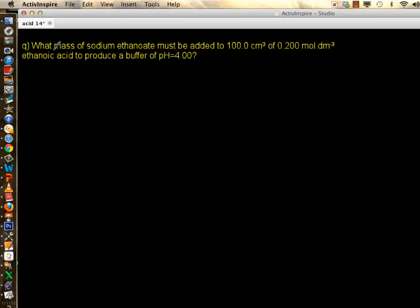In this buffer question we are challenged to find the mass of the salt, this time sodium ethanoate, added to a certain volume of a certain concentration of ethanoic acid to produce a buffer of pH equal to 4.0. So we go after our equation.